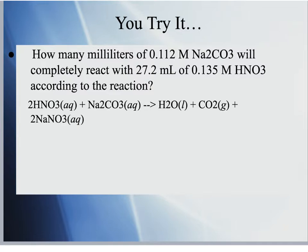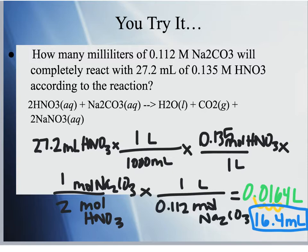Final practice: how many milliliters of a 0.112 M sodium carbonate solution will completely react with 27.2 mL of a 1.35 M nitric acid solution? Use the given balanced reaction and the same stoichiometry steps. The answer is 164 mL. That concludes our 24-slide adventure through solution stoichiometry, dilutions, and molarity. Practice these on Socrative, and come see me with any questions before a quiz or test.